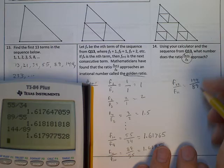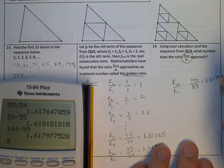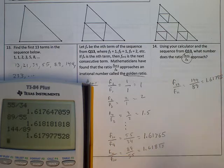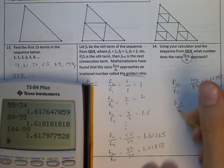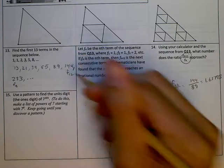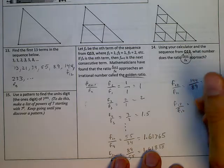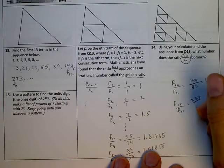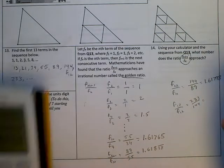First, quickly, for this sequence in question 13, this is one that we talked about in class. It's called the Fibonacci Sequence. And you don't necessarily have to know its name, but the key here to find this next term is you're going to add the two previous terms. So in other words, 1 plus 1 is 2, and then 1 plus 2 is 3, 2 plus 3 is 5, 3 plus 5 is 8, 5 plus 8 is 13.